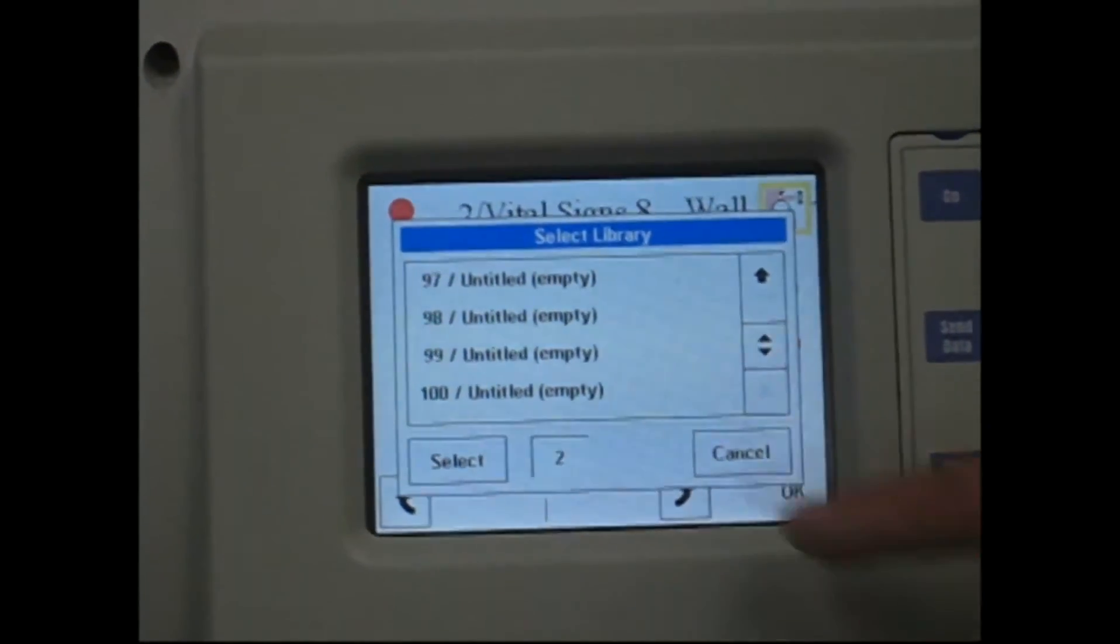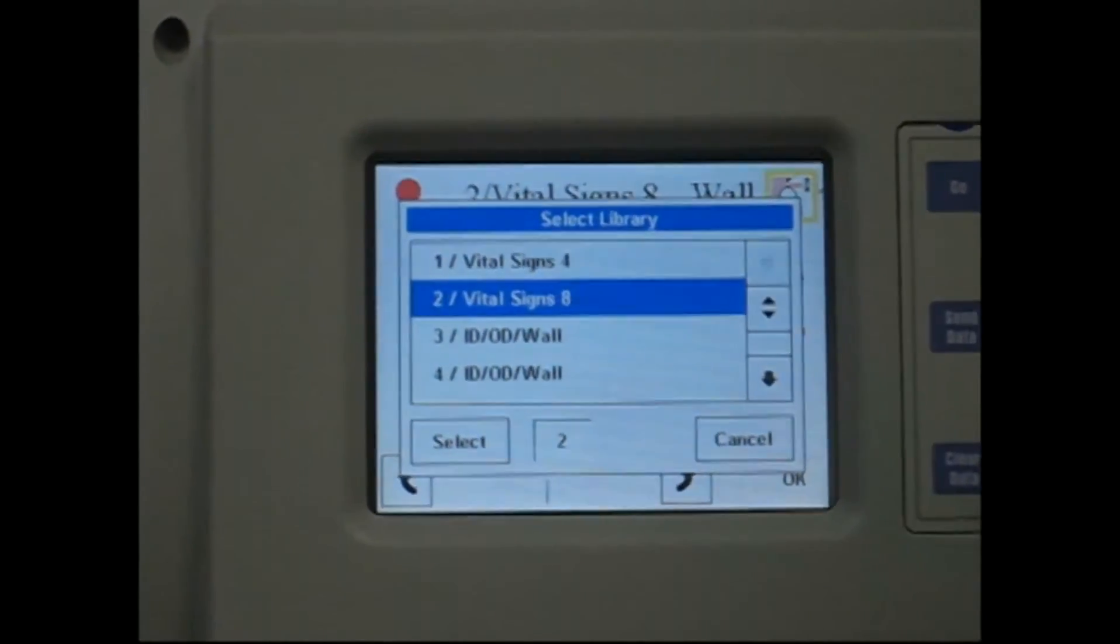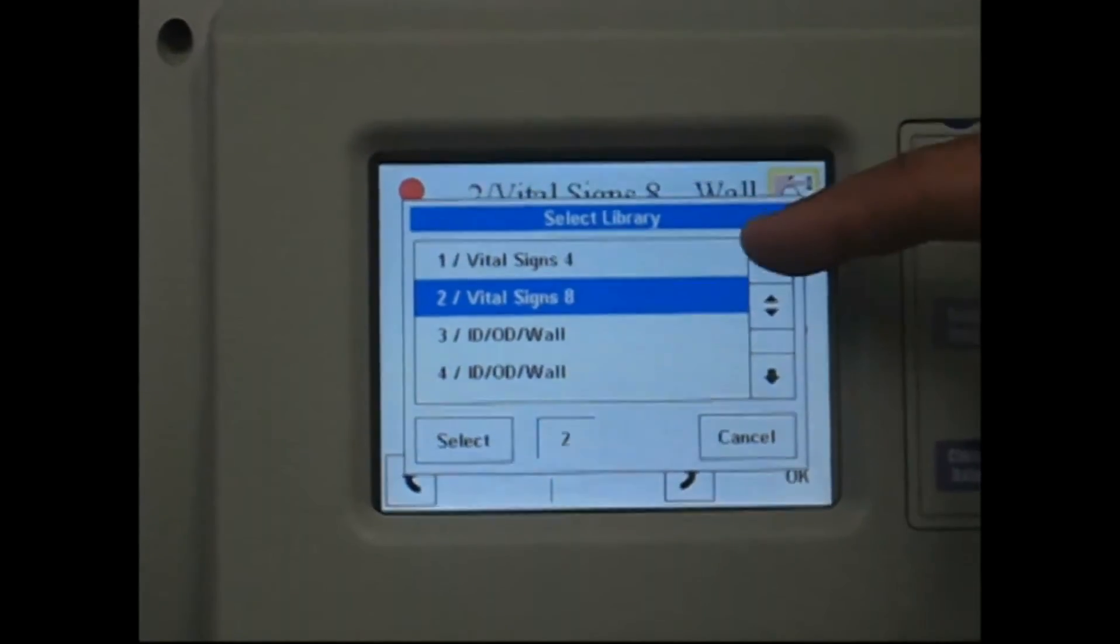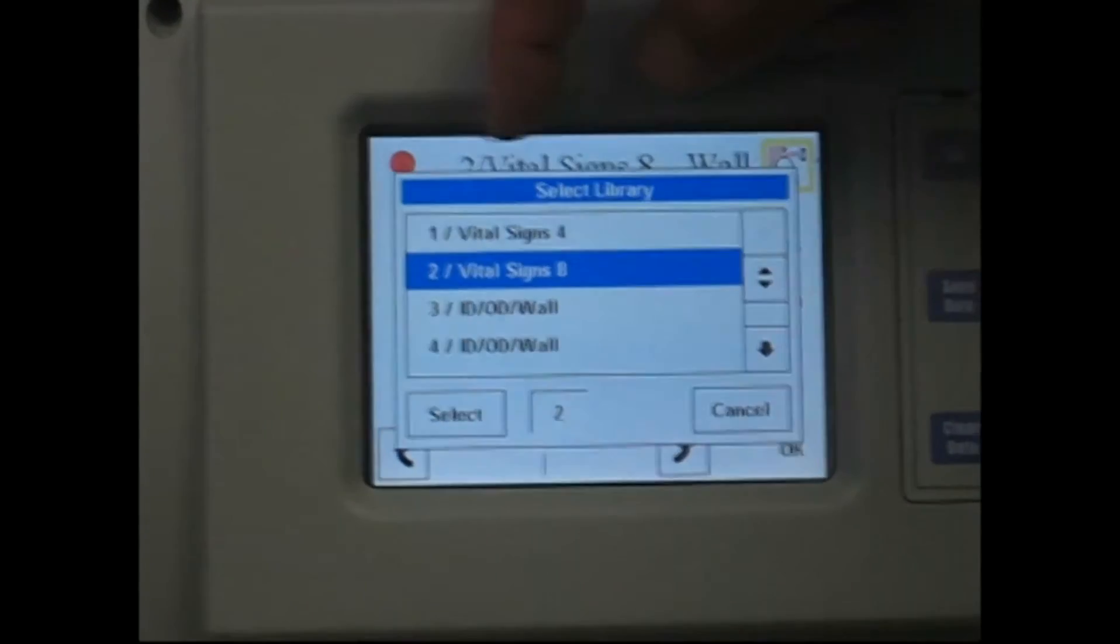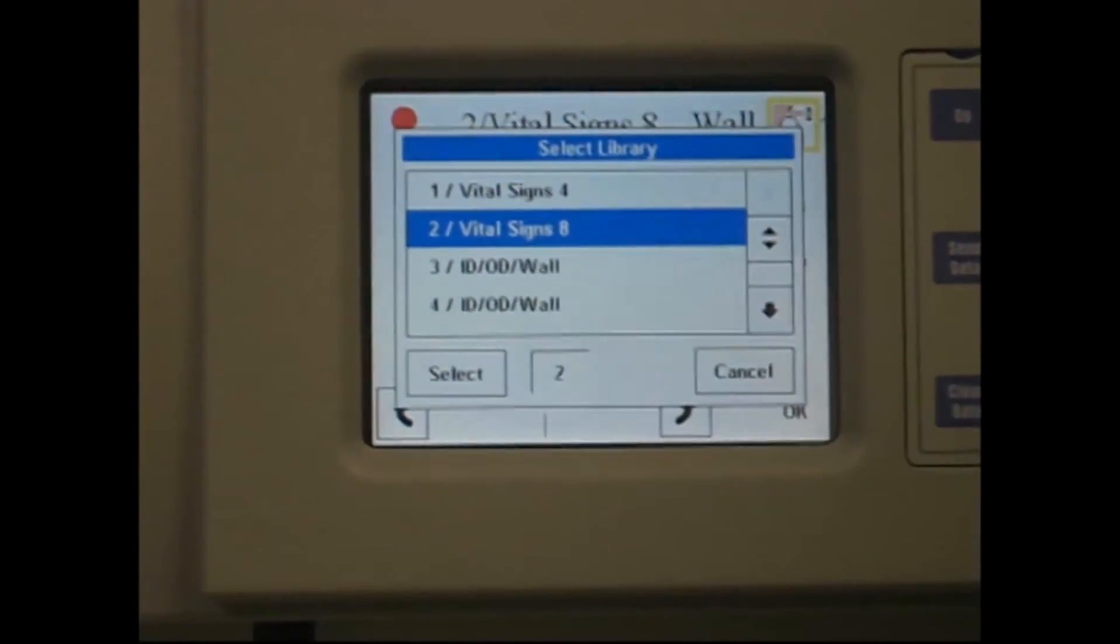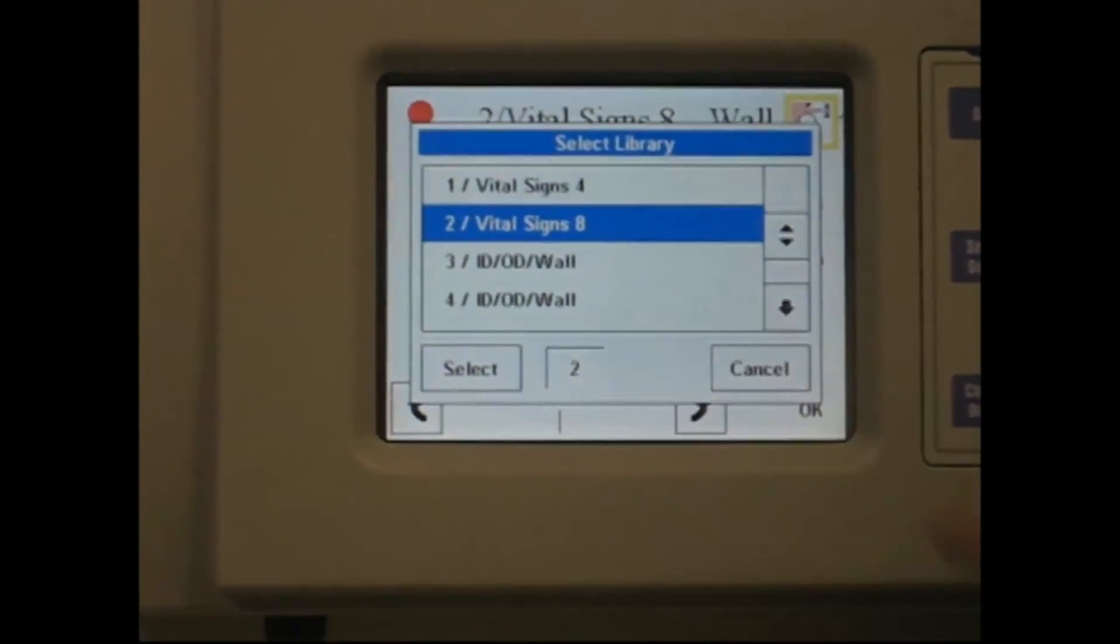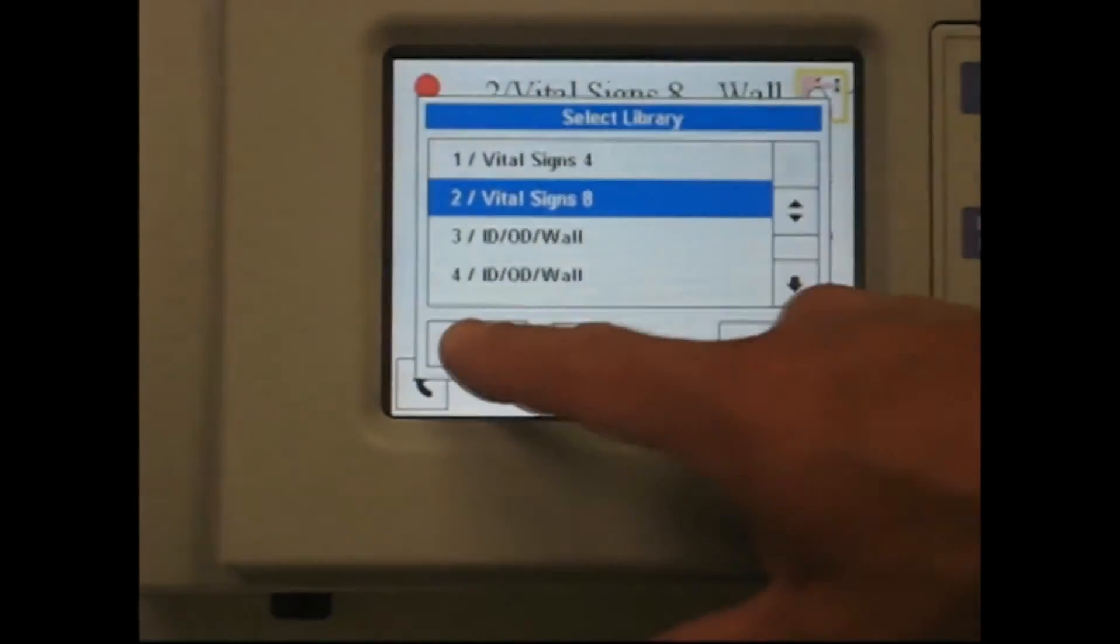This particular unit has 100 different libraries where you can store different product specs or different setups. We've actually selected two libraries here. One is product number one, which indexes four times around the tube, and then library number two indexes eight times. So the moment we've selected eight, press select.